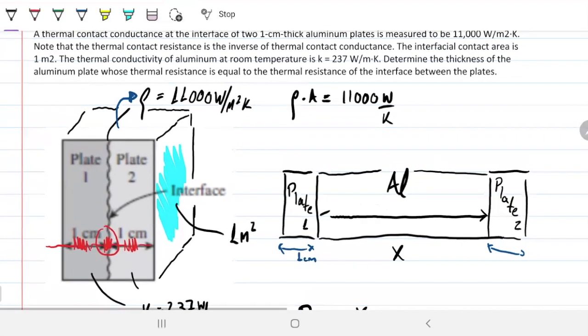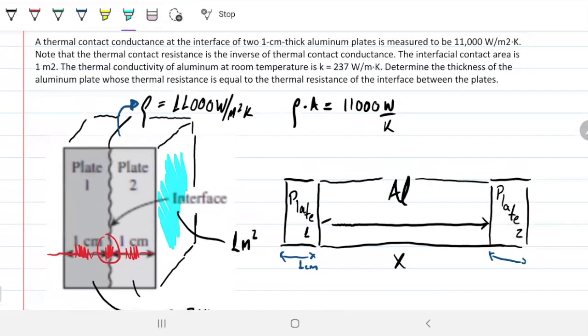And then the sentence on the problem pretty much tells us that the thermal contact resistance is the inverse of the thermoconductance. But it didn't really need to tell us that, because you can just look at the unit. Check out what's happening here. We have watts per Kelvin. And we know that the resistance, the thermal resistance, is given in Kelvin per watts. So pretty much what I can do is I can invert these two fellows here.